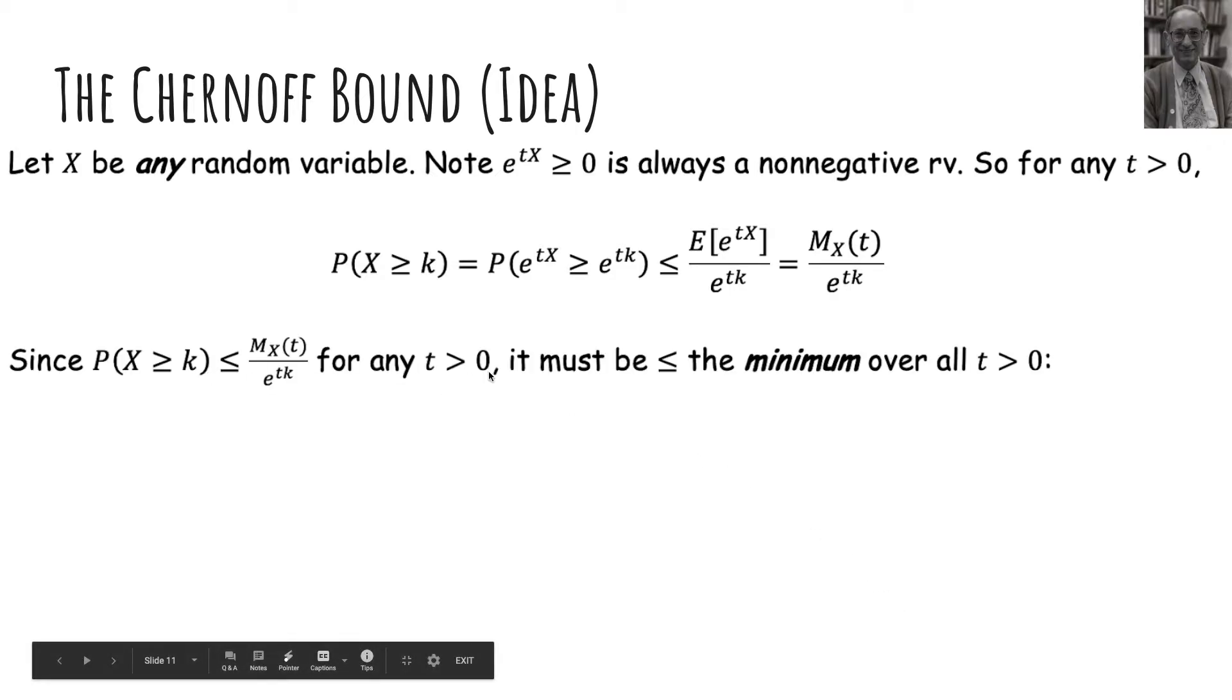So since the probability x greater than k is less than this thing for any choice of t, if I in particular found the t that minimizes this right-hand side, it actually must be less than that as well. So it's less than or equal to the minimum of this function over all choices of t. And so my goal is going to be choosing a t that makes this as small as possible so that I can bound the probability x is greater than k by a really small number, which is ideal.